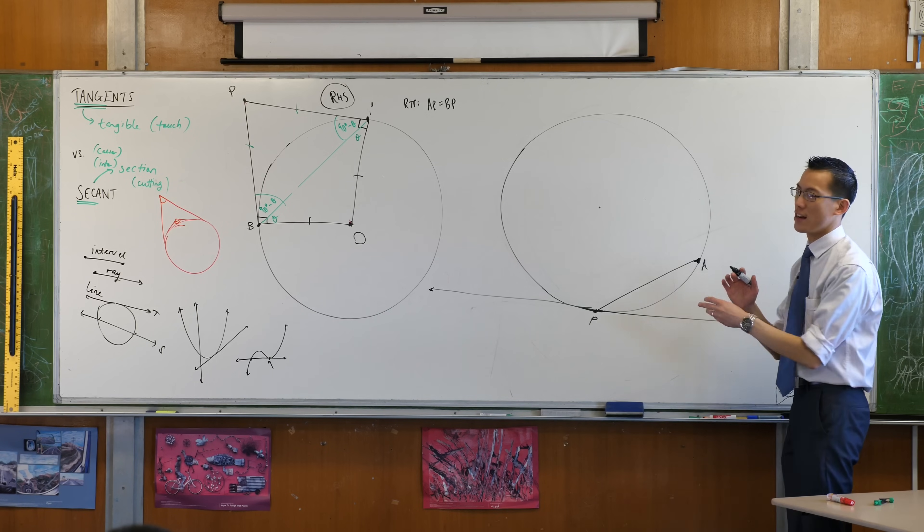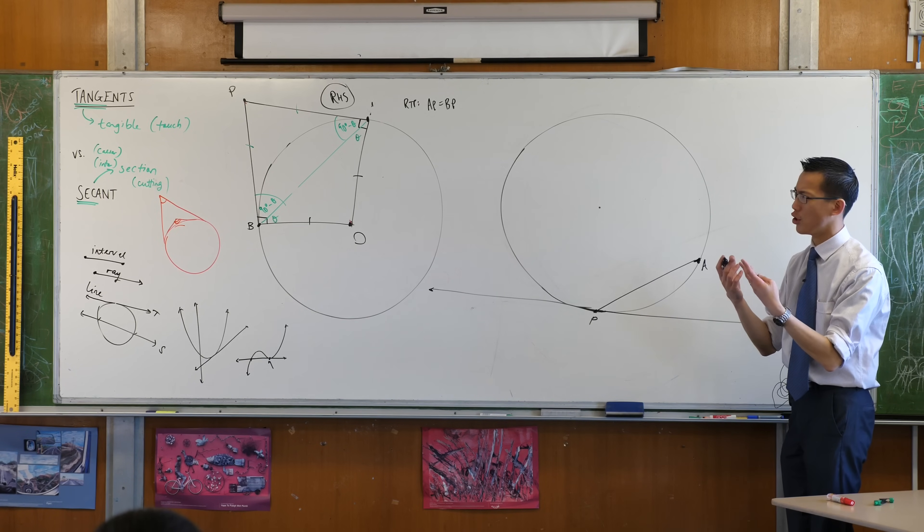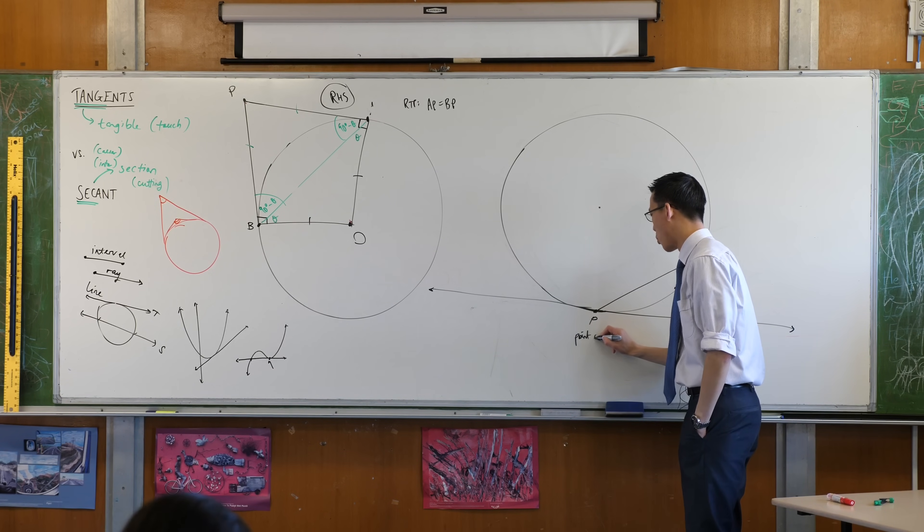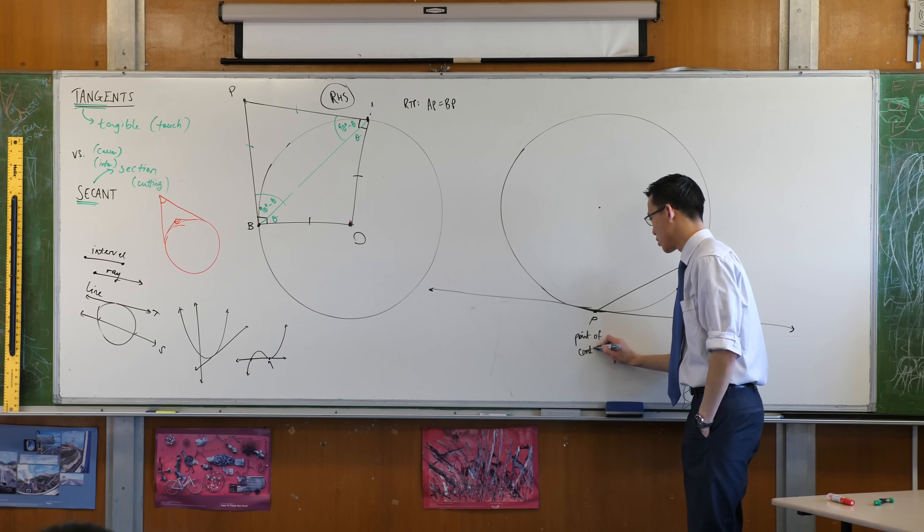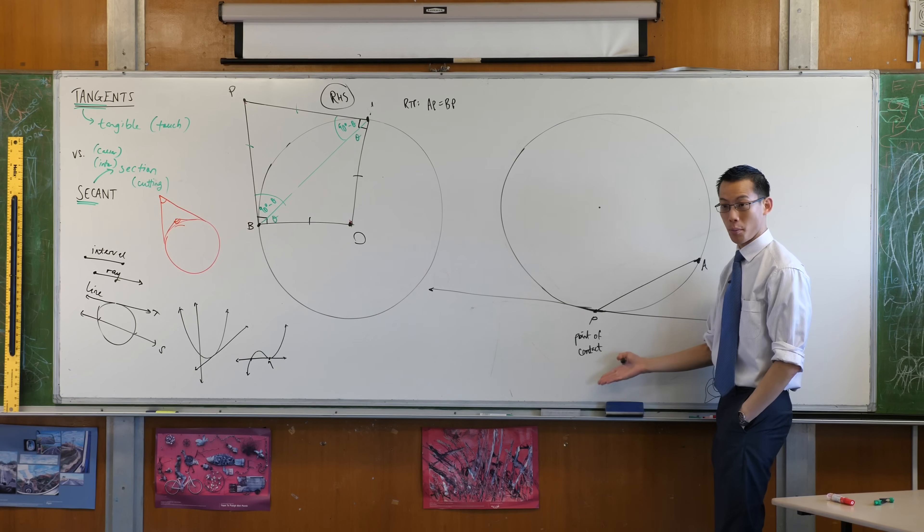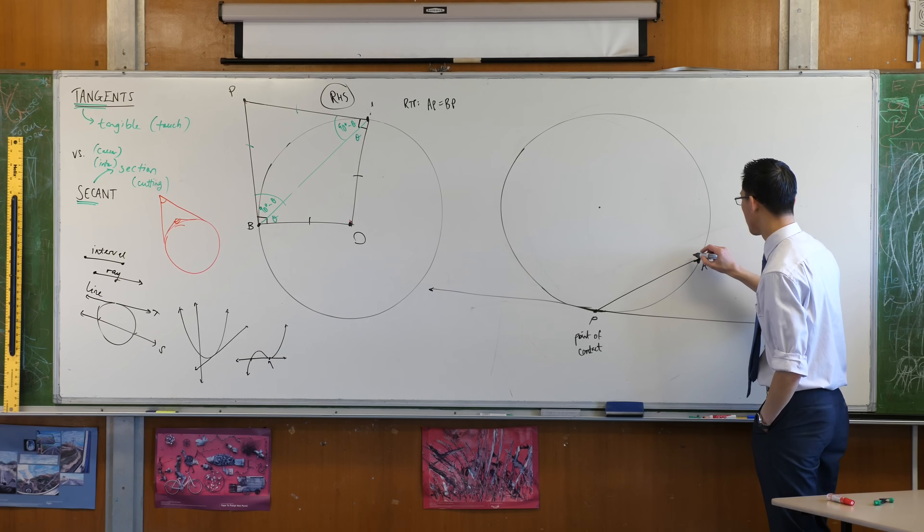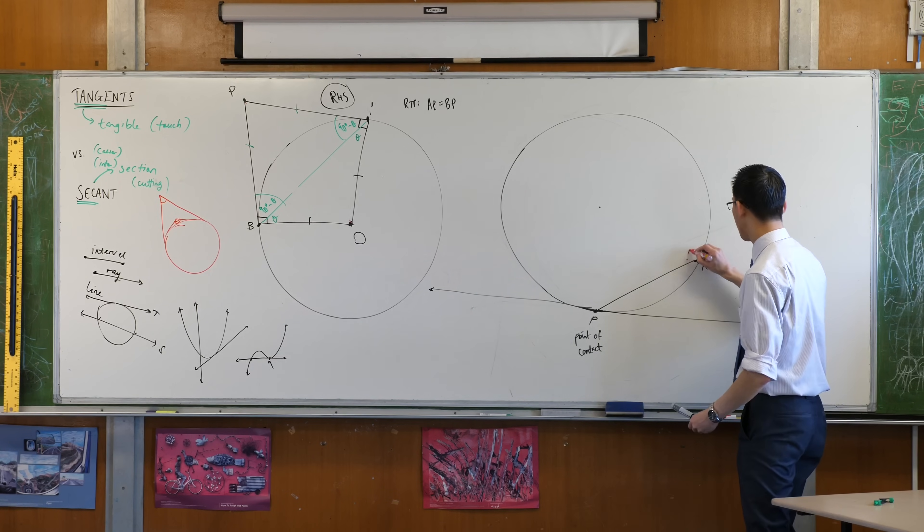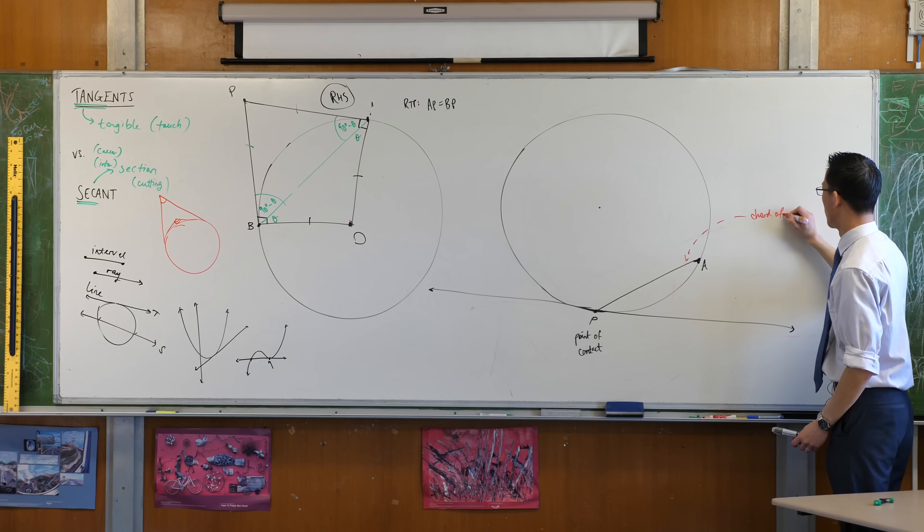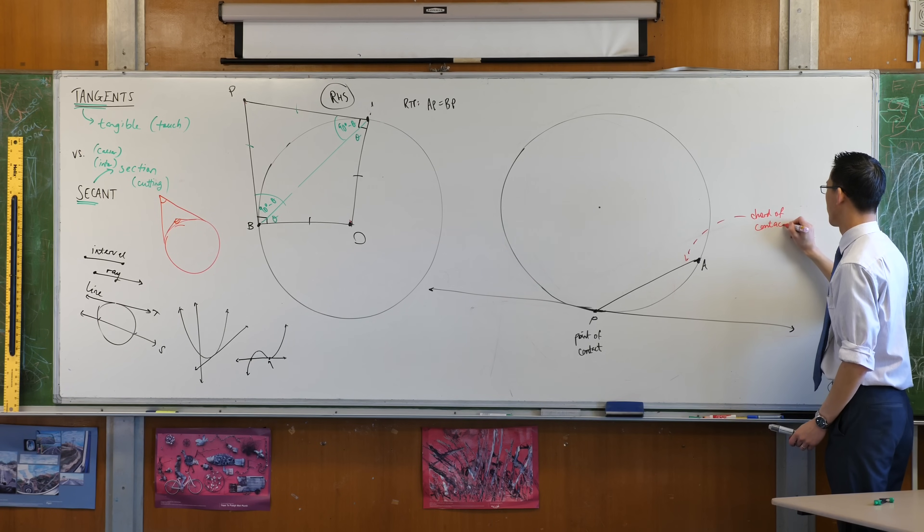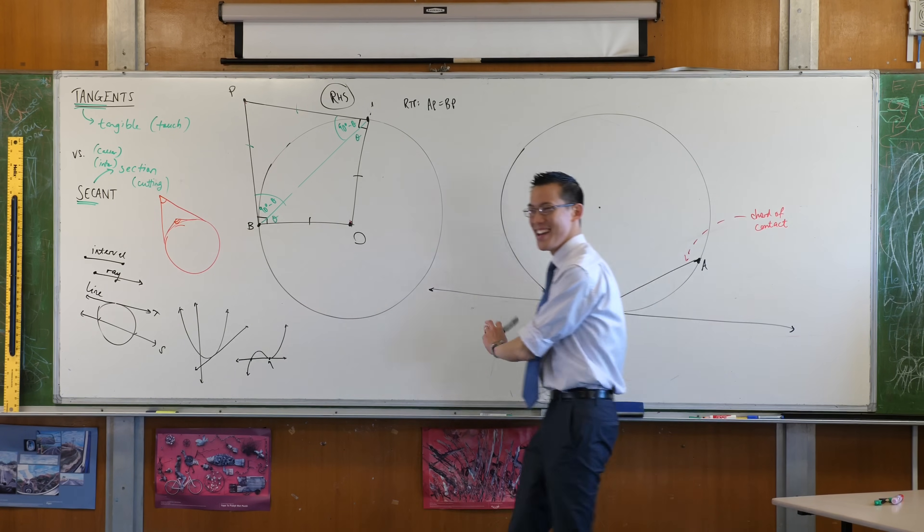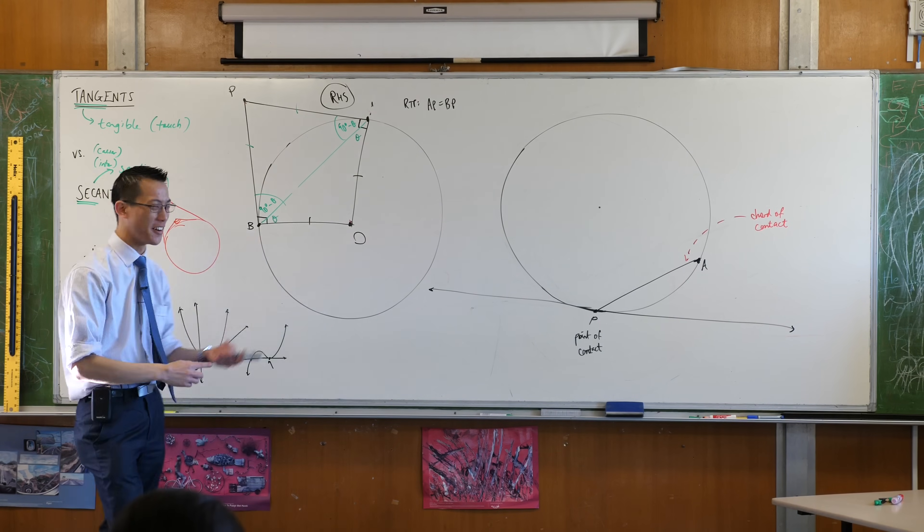Now just a minor piece of notation, terminology for you. You know how this is the point of contact? The point of contact. Because this chord joins up with the point of contact, we call it, I'll use a different color, it's a chord that joins up with this point of contact, so it's called the chord of contact. I know, right? It's amazing. So you've got a point of contact, you've got a chord of contact.